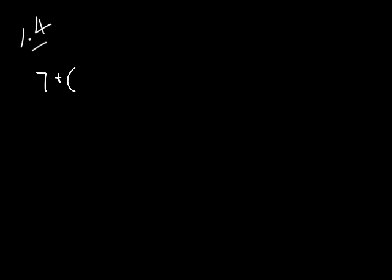This is lesson 1.4, subtraction of real numbers in elementary algebra. We're going to jump over to example number 3. It's very similar to what we did in the last lesson. What we do is we don't subtract numbers, we pretty much add their opposites.